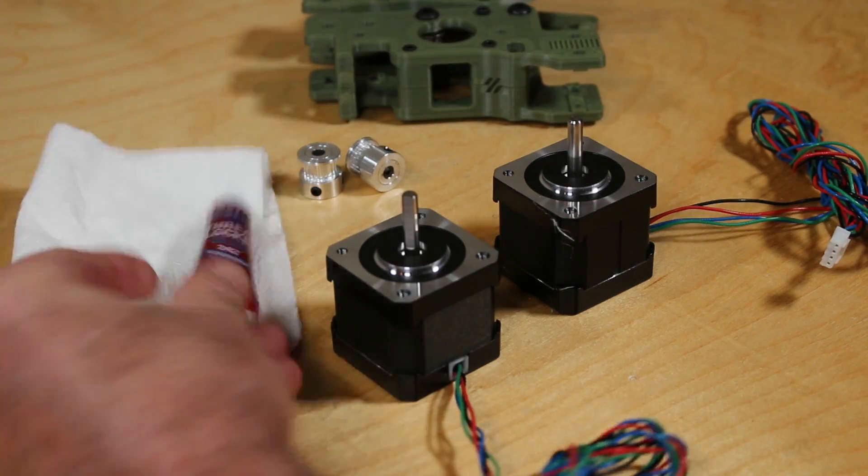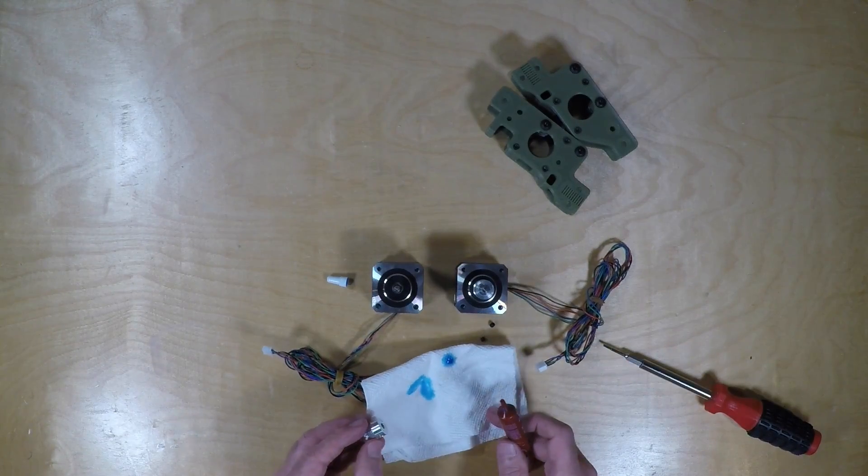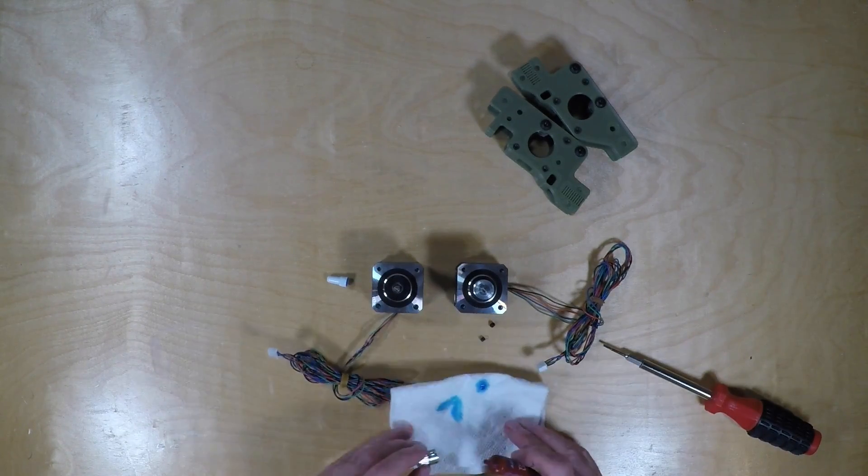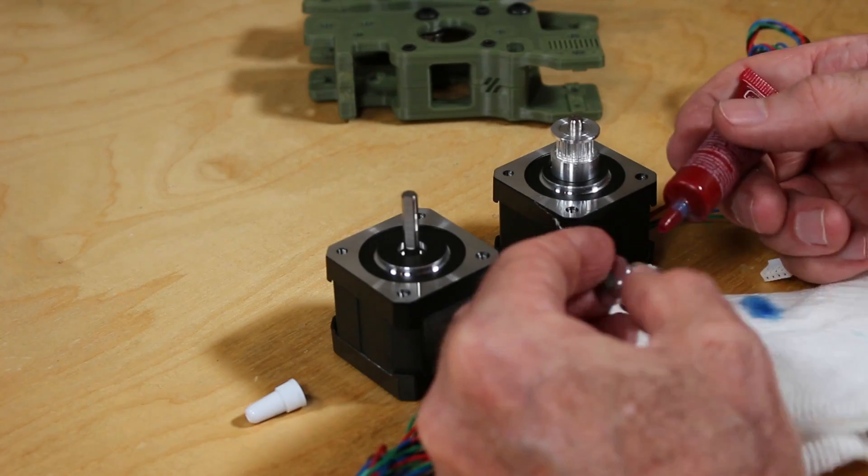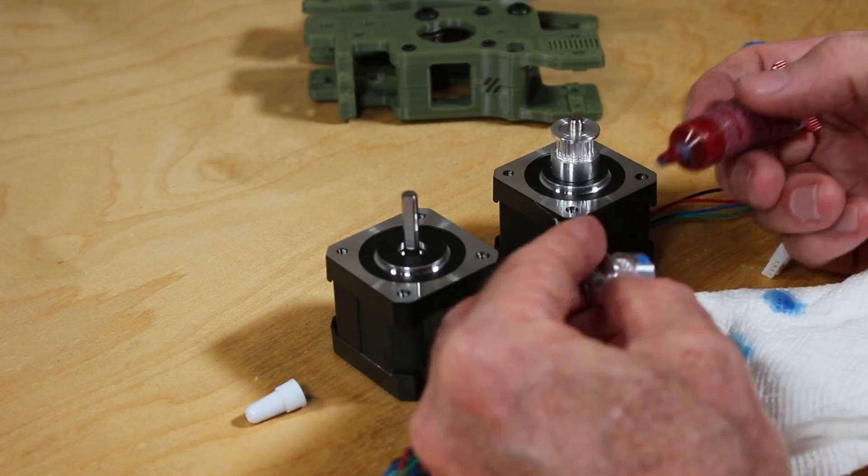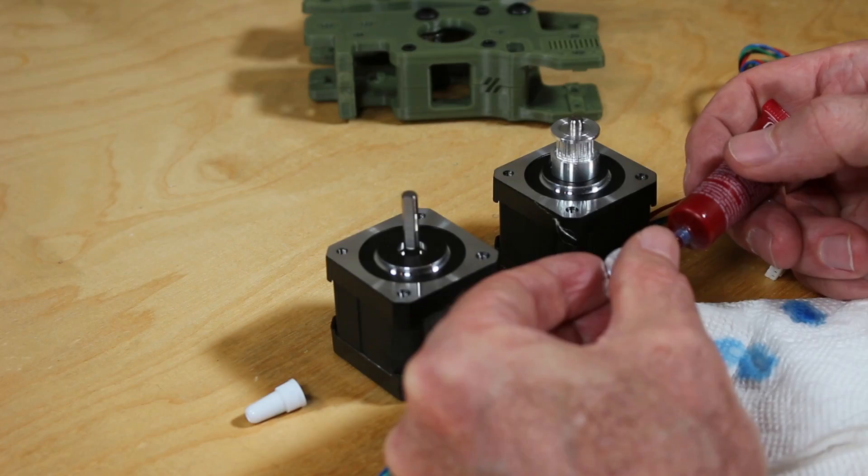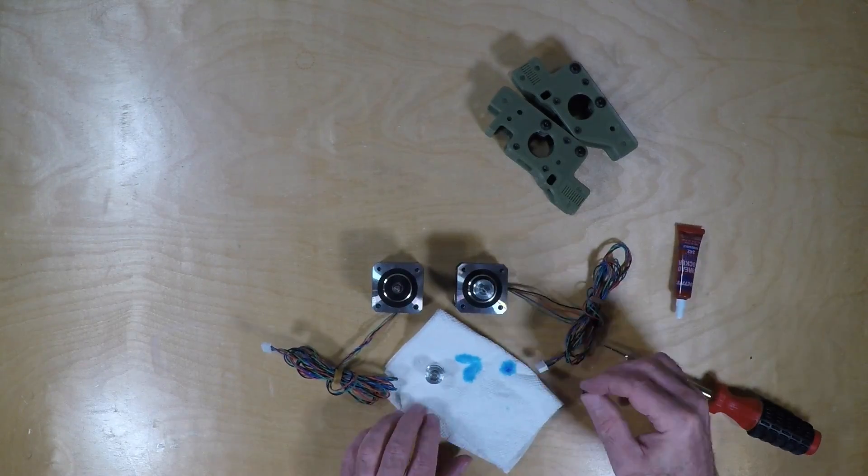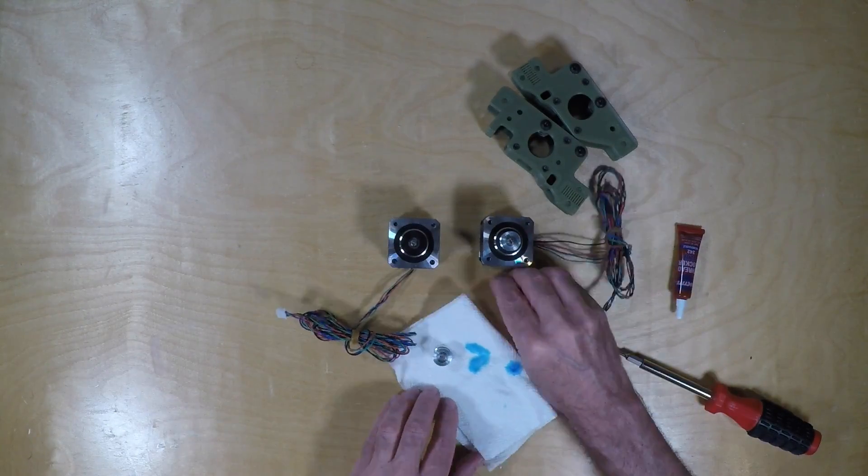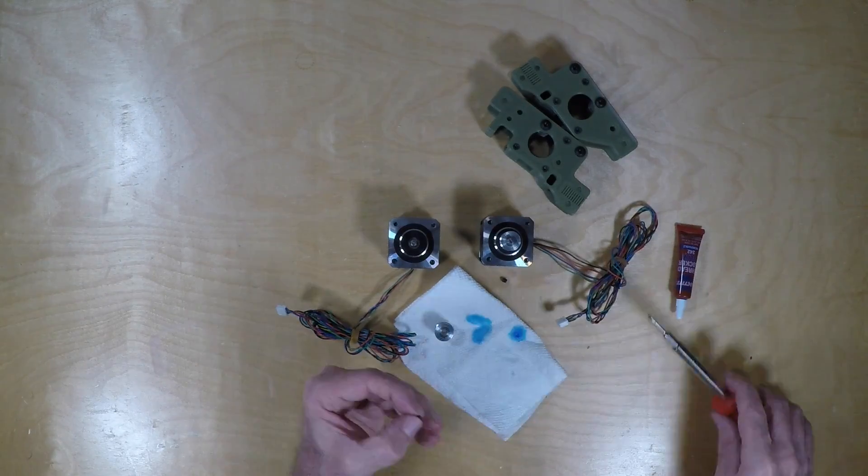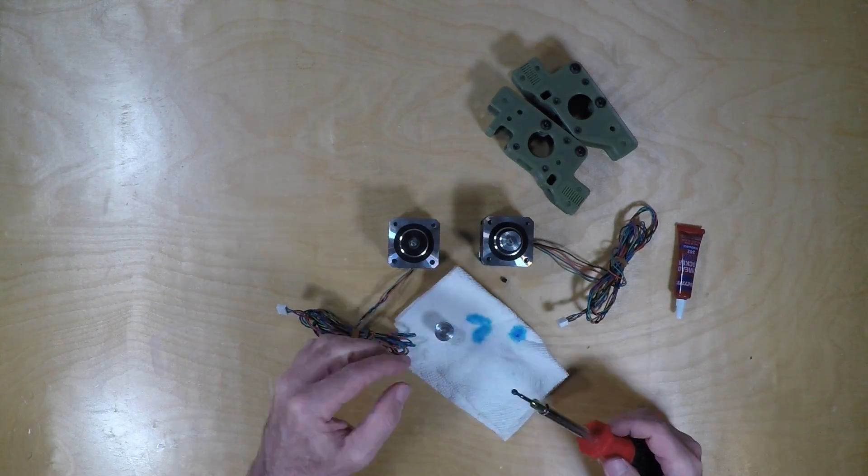And you'll need the pulleys, the 222 pulleys. This is messy, I wish I had the gel. But we start by extracting the small set screws and put a drop of Loctite in each. This can be messy, you'll have to wipe this off, make sure you use a napkin.